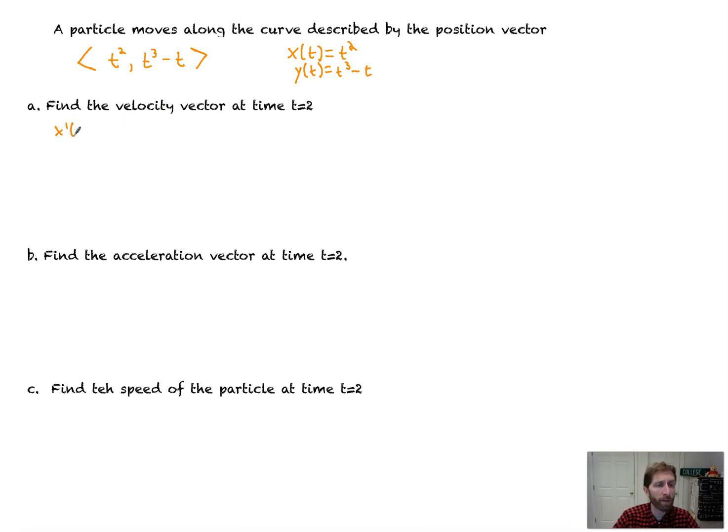Find the velocity vector at time t equals 2. So what we need is, we need x prime of t, which is just taking the derivative of that, which is 2t, and then we want the velocity vector in the y direction as well. It's y prime of t, which is 3t squared minus 1. So then the velocity vector itself is going to be composed of x prime of 2, y prime of 2. Sometimes you'll see that with these braces. Sometimes you'll see them with parentheses. Now it's just plugging 2 into each of these things. 2 times 2 is 4. 2 plugged into y prime, 2 squared is 4 times 3 is 12 minus 1 is 11. There we have it. There's our velocity vector.